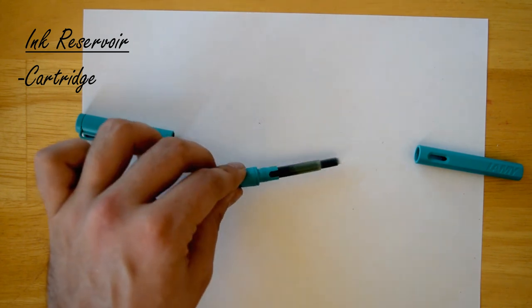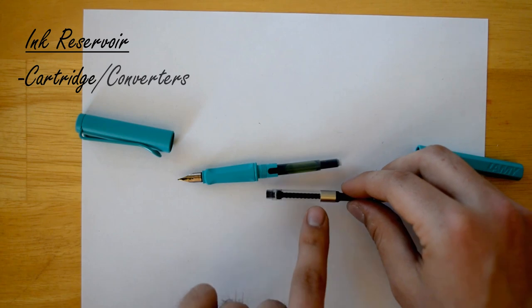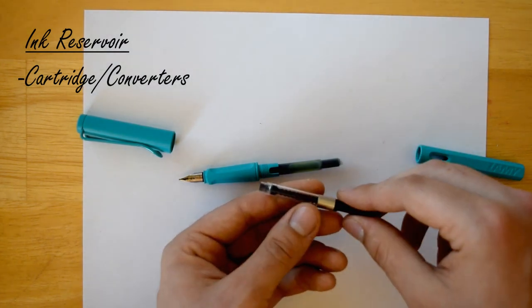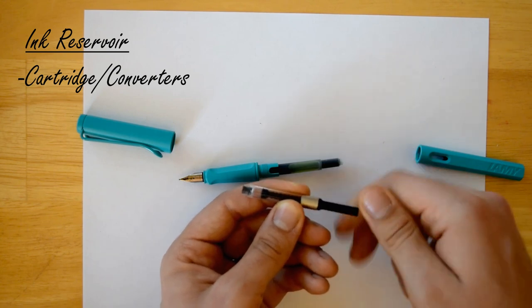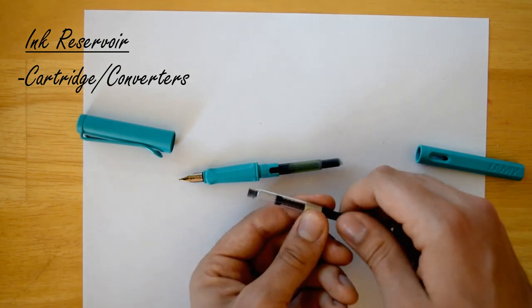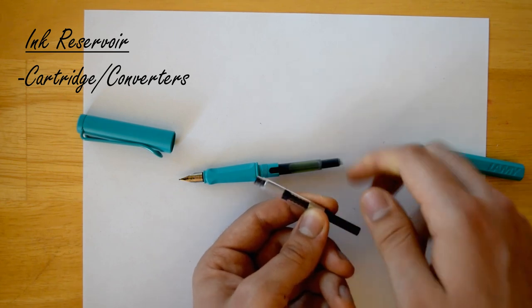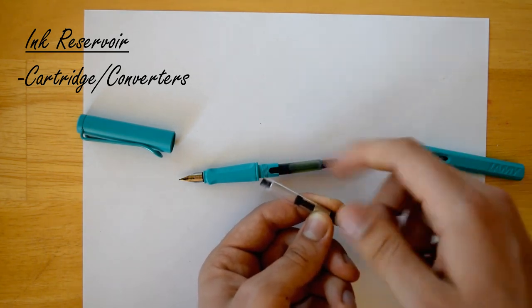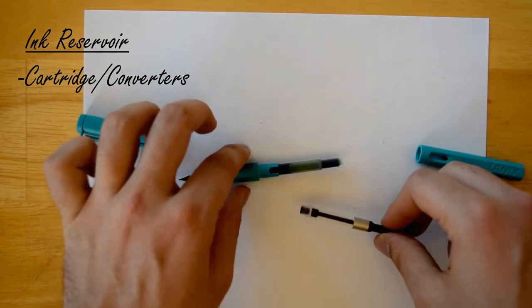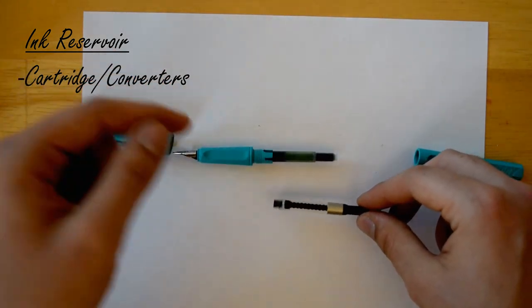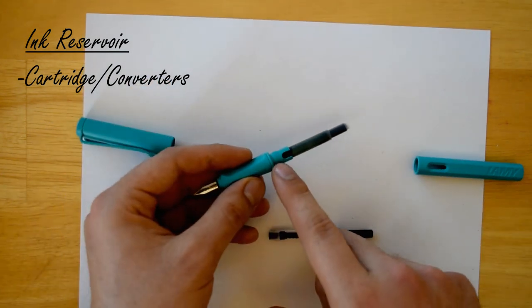The cartridge pens also accept converters, which are plastic pistons and are operated by this piston knob. When you turn it, the piston moves back and forth in the cylinder, absorbing the ink or pushing it out.